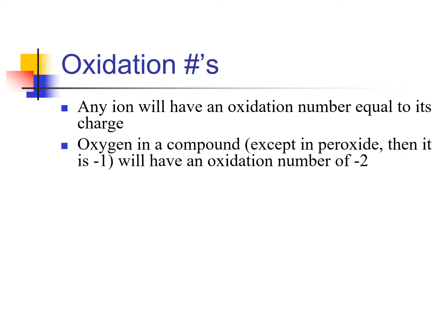If you have an ionic compound, each ion in that compound will have an oxidation number equal to whatever its charge is. If oxygen is in a compound, except in a peroxide ion — and a peroxide ion is O2 two-negative, where each oxide would be negative one — generally, oxygen in a compound, ionic or molecular, will have an oxidation number of negative two.